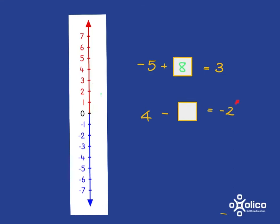Let's have a look at this one — try it on your own first and then we'll go over it together. Our starting point is 4, we know we're going down because we're subtracting, and we want to end up at negative 2. So how far have we gone down? We went 4 down to get to 0, and 2 more down to get to negative 2. So in total we've gone 6 down. Therefore 4 subtract 6 gives me negative 2.